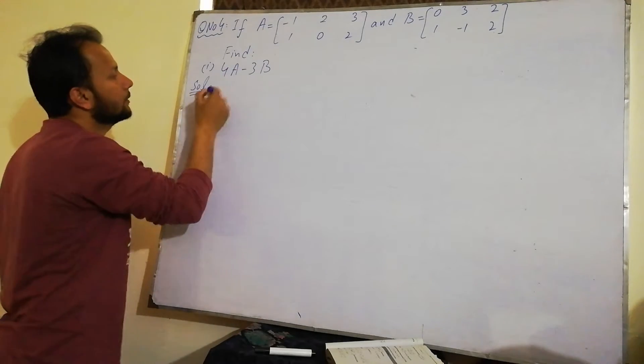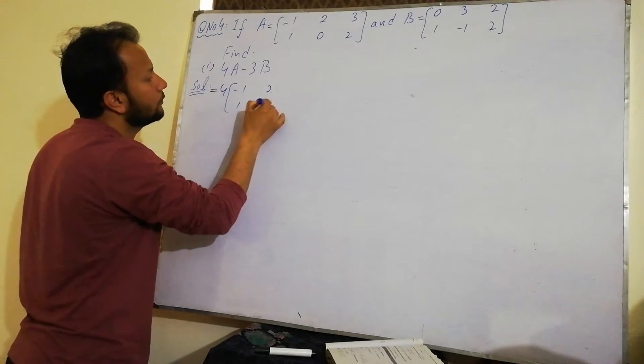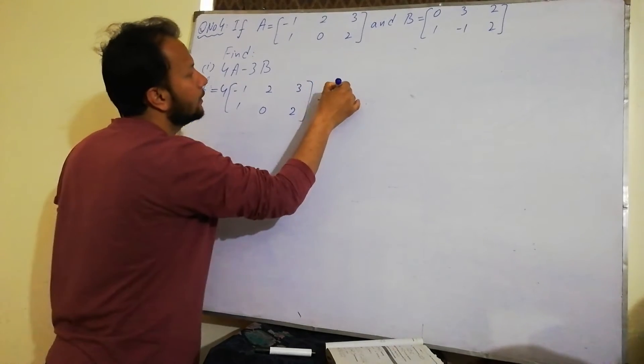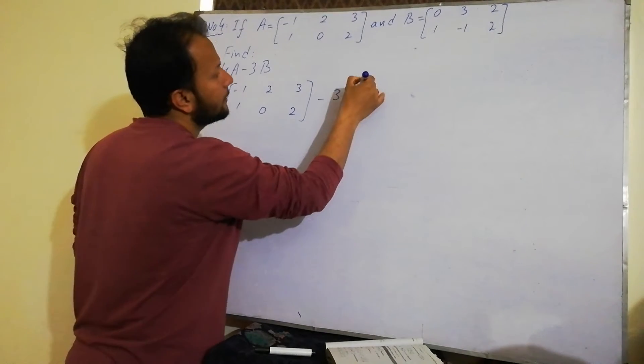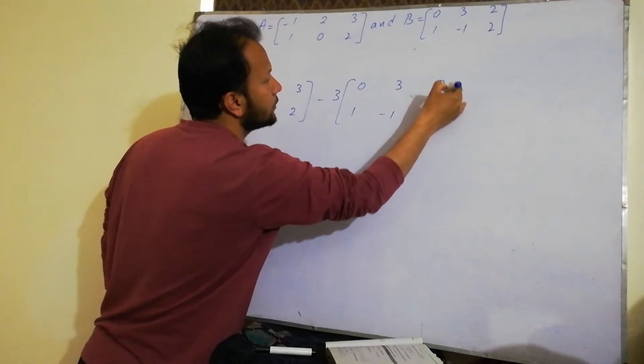So 4A-1, 1, 2, 0, 3, 2, then minus 3. This matrix is 0, 1, 3, minus 1, 2 and 2.